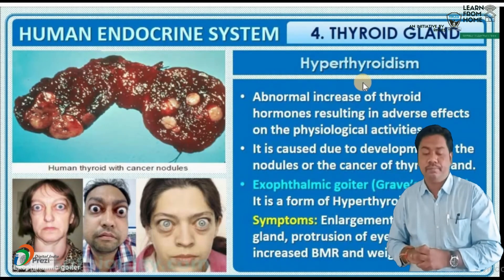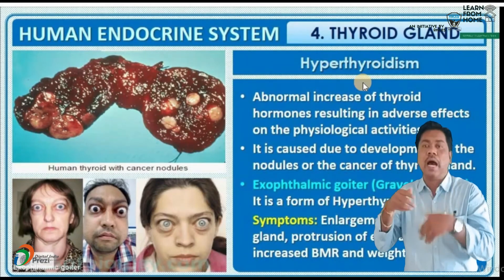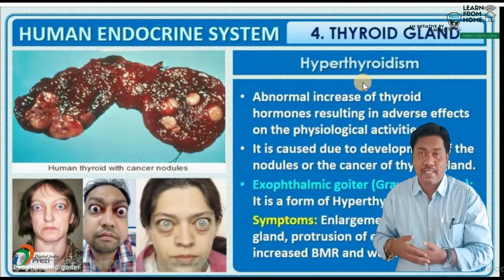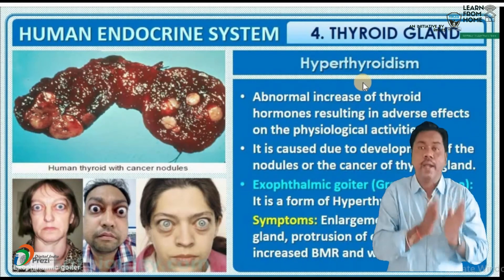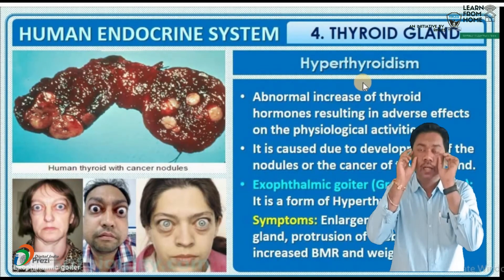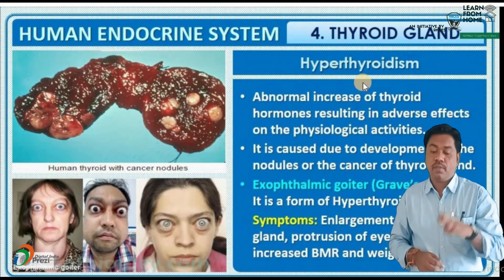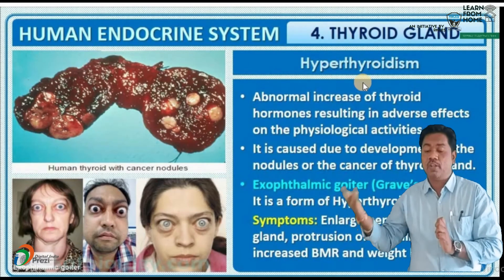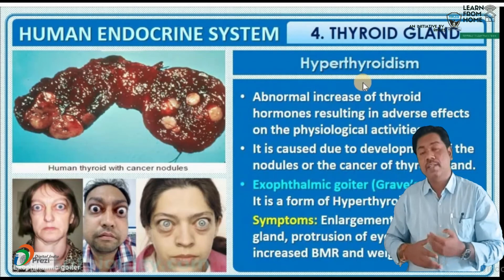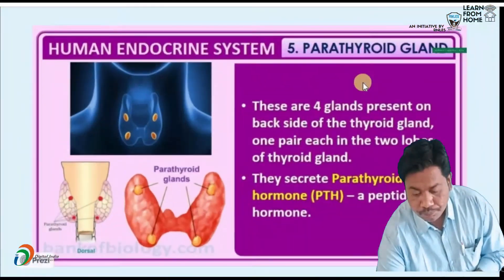Graves disease or exophthalmic goiter is caused by excess thyroxine from the thyroid gland. Exo means outside, ophthalmic means eyes — the eyes protrude out from their orbits. Due to increasing eye size, the eyes come out from the orbits, hence exophthalmic goiter. Symptoms include enlargement of thyroid gland, protruding eyeballs, peculiar appearance of eyeballs, increasing metabolic rate, and weight loss.